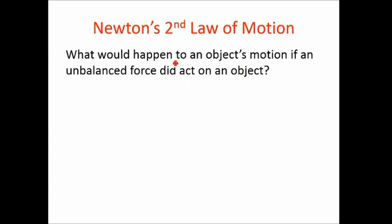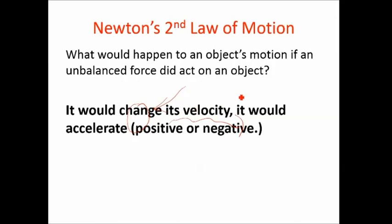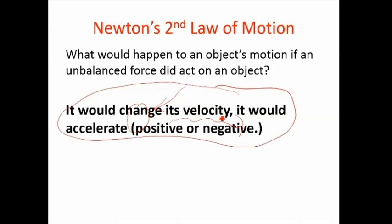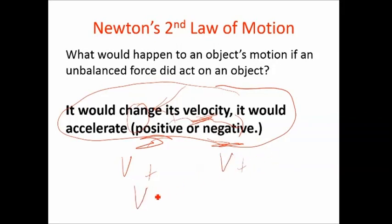If you had a ball moving along and there was an unbalanced force — say pushing on it the other way — it would slow the ball down. Newton's second law says if you apply a force on something, you're going to change its velocity. If you push in the positive direction and the velocity is positive, it'll speed up. If you push negative and the velocity is positive, it'll slow down. If you push positive and the velocity is negative, it'll slow down. And if it's traveling negative and you push it negative, it'll speed up.